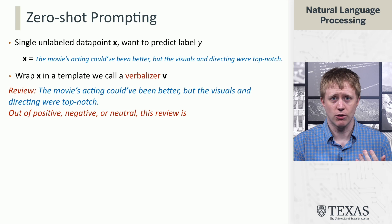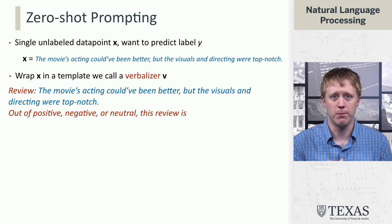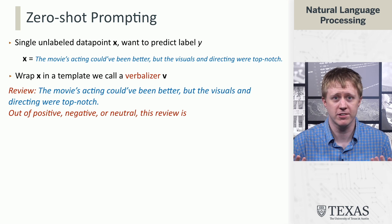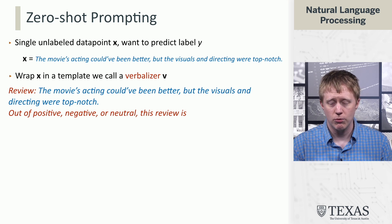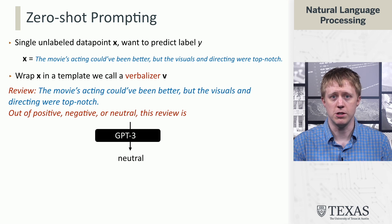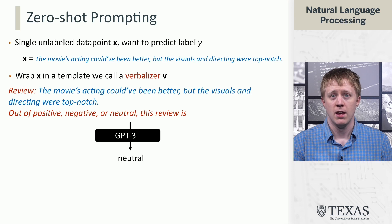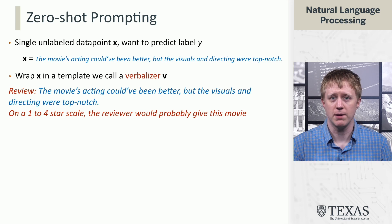The verbalizer does two things. First, we append 'review' to the beginning just to tell the model that this is a movie review — this may not necessarily be the best template, but it's one way to indicate this to the language model. Then we give it a prompt before it makes its predictions: 'Out of positive, negative, or neutral, this review is blank.' Then we generate with GPT-3, and ideally it generates 'neutral.'